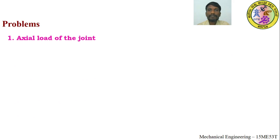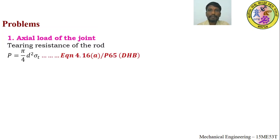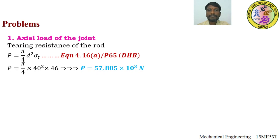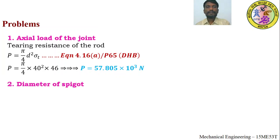Point 1 — Axial load: Considering the tearing resistance of the rod using equation 4.16a (page 65), P = (π/4) × d² × σ_t. The calculated axial load P = 57,802.2 N, which is the axial thrust taken by the cotter joint.